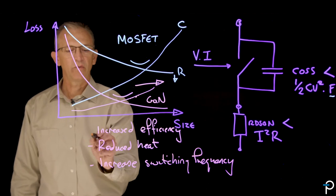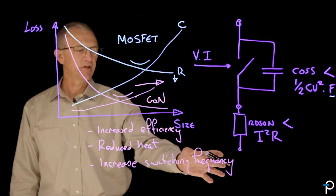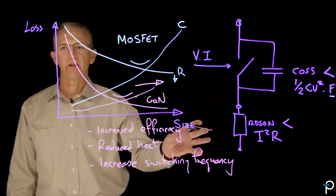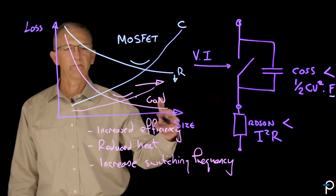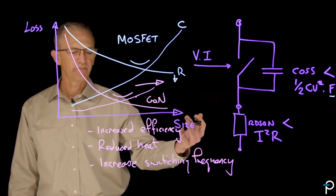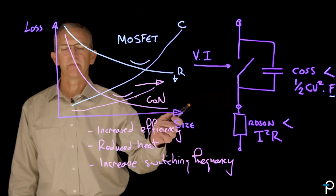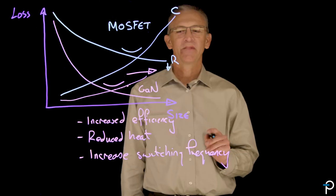Now, that's not always available to you, because you tend to be limited to a certain extent by the magnetics and other parasitic elements in your circuit, but you're no longer limited by the speed of the switch.